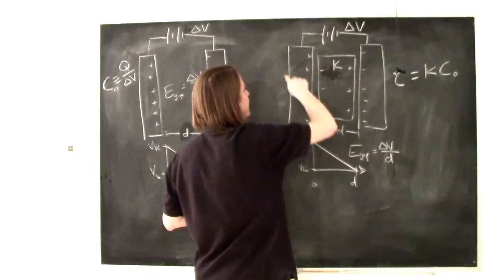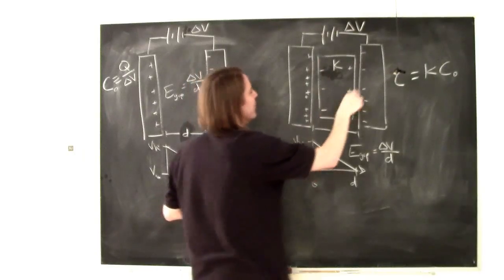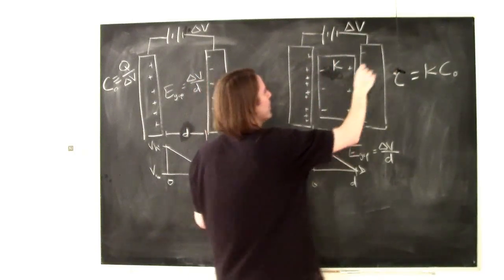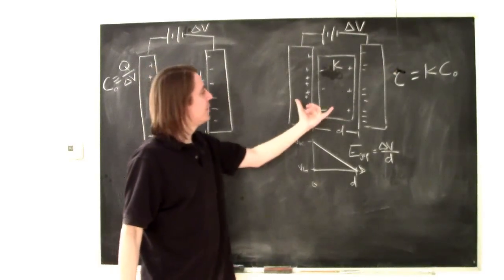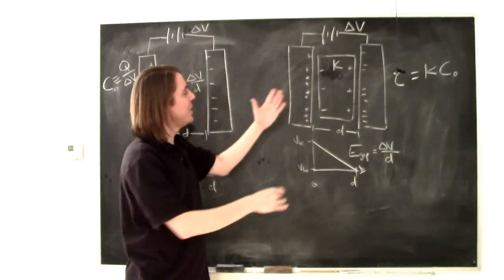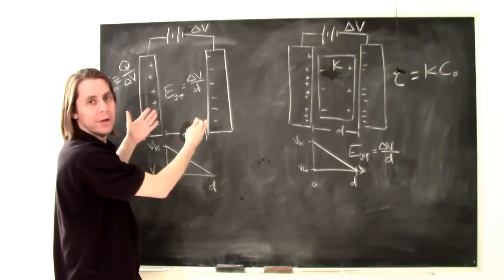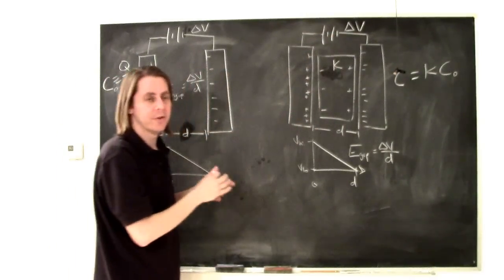So, what happens is, more charge flows onto the plates to essentially compensate for the charge that was created by the polarization of the dielectric. So, I'll put three more positives over here, three more negatives over there. So, that compensates for those charges. So, in the end, you have essentially the same surface charge that created the original E-gap. That's the fundamental difference. If this is a constant delta V, charge can change. That's the difference.